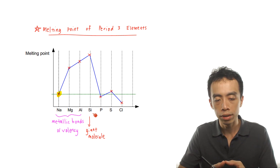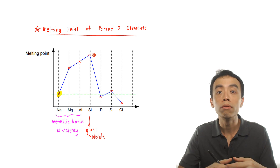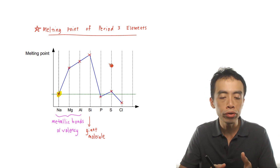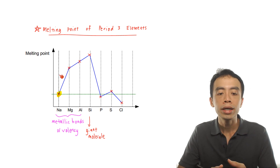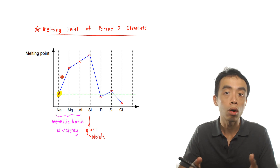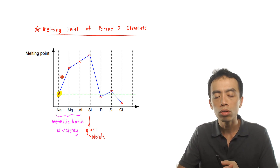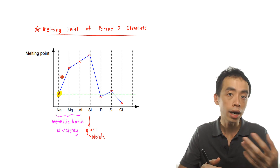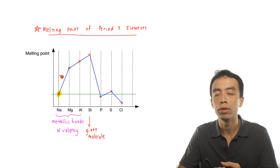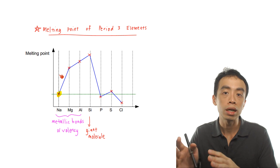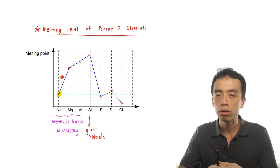For Period 3 elements, silicon has the highest melting point. However, it is important not to overgeneralize — we should not conclude that all giant molecules will have a higher melting point than all metals. In general, metals have high melting points due to strong metallic bonds, and giant molecules also have high melting points due to strong and extensive covalent bonds. We usually do not compare metallic bonds versus covalent bonds to determine which is stronger.